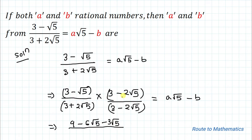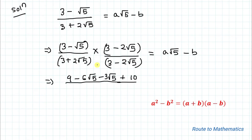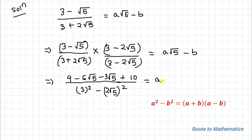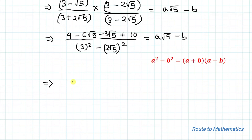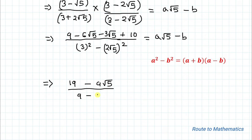So: 3 times 3 is 9; 3 times minus 2 root 5 is minus 6 root 5; then minus root 5 times 3 is minus 3 root 5; and minus root 5 times minus 2 root 5 — the two negatives become positive — giving root 5 times root 5 equals 5, times 2 equals 10. In the denominator we apply the algebraic identity a squared minus b squared equals (a plus b)(a minus b), taking a as 3 and b as 2 root 5, giving 3 squared minus (2 root 5) squared, which is 9 minus 4 times 5, equals 9 minus 20.